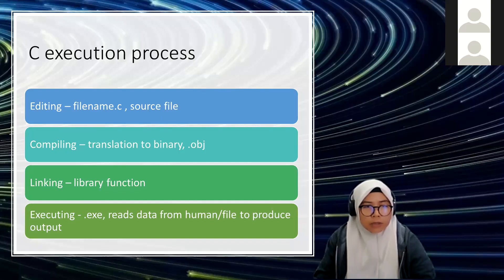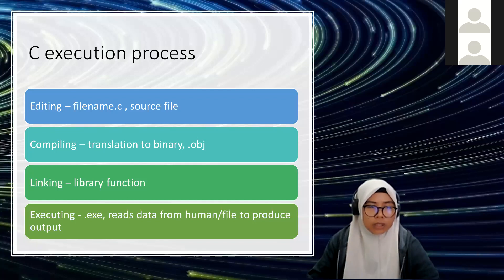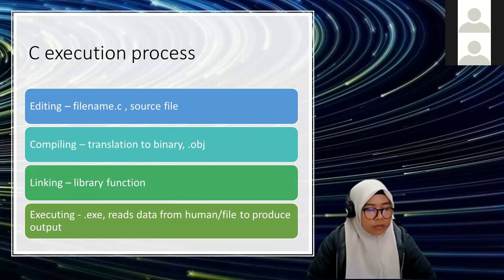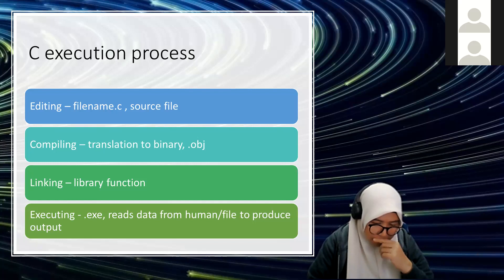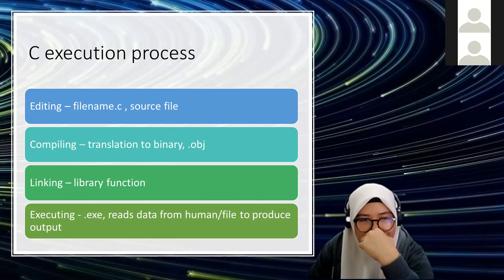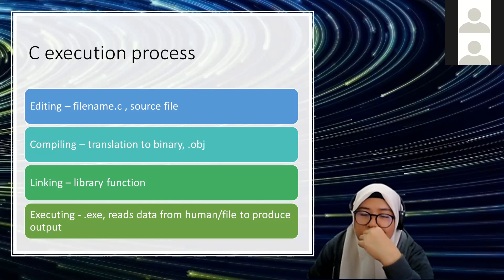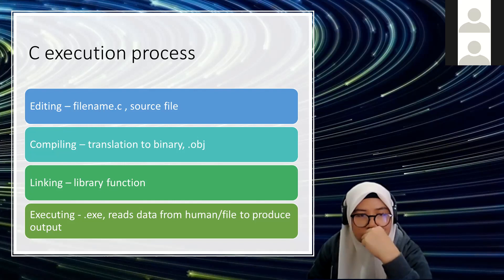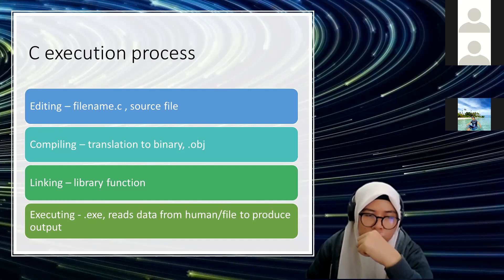The execution process — how a program runs. First, we have a file name and the editing process. The editing is what we type. What we type is called the source file. In C, the file extension is .c, and in C++ it will be .cpp. Inside is the file name dot c — that is called the source file.